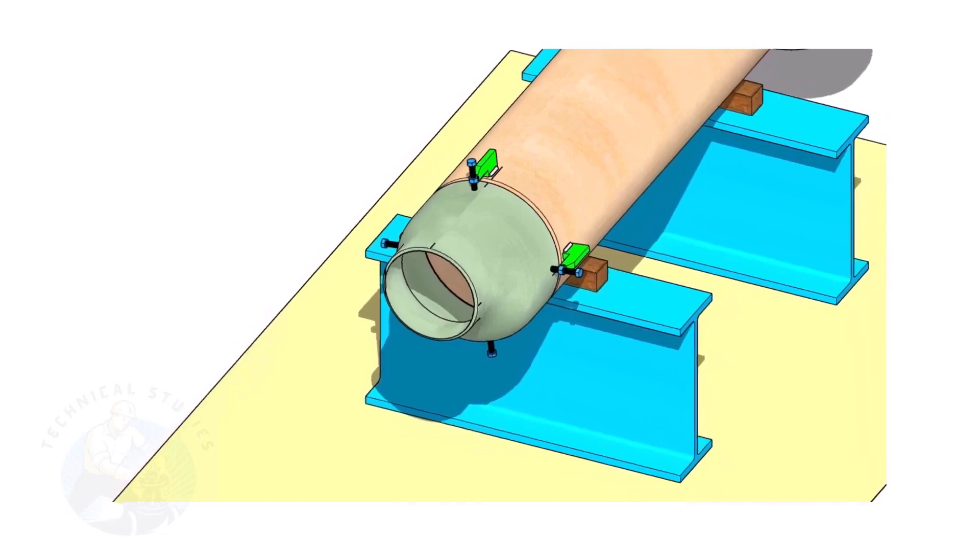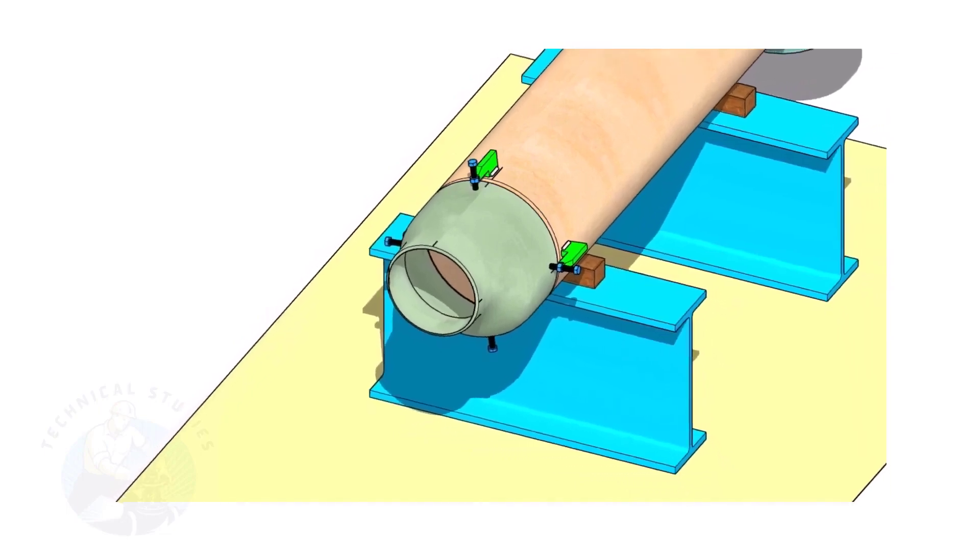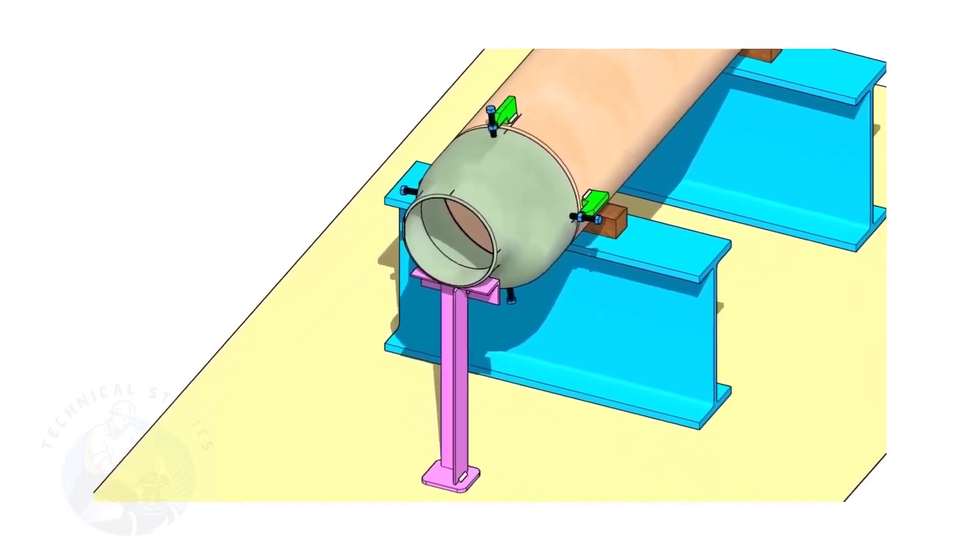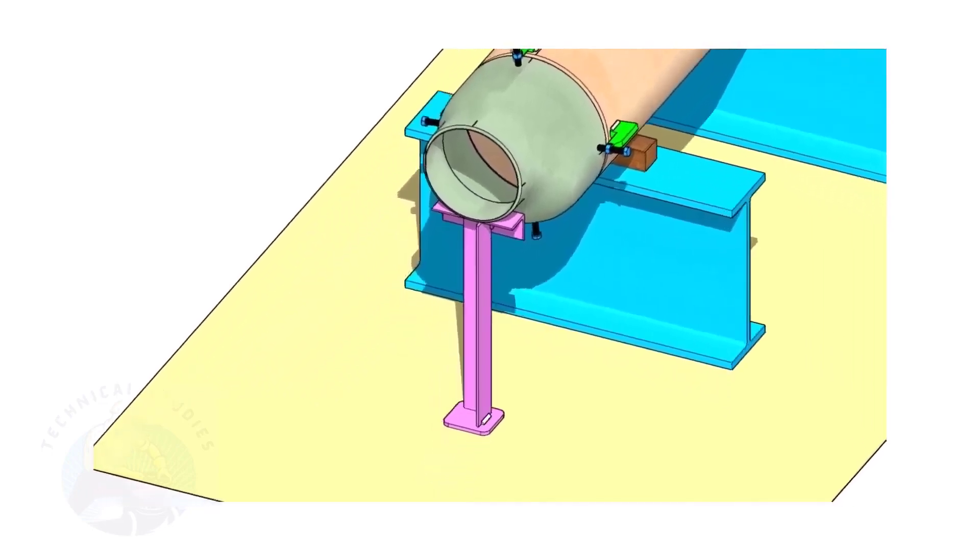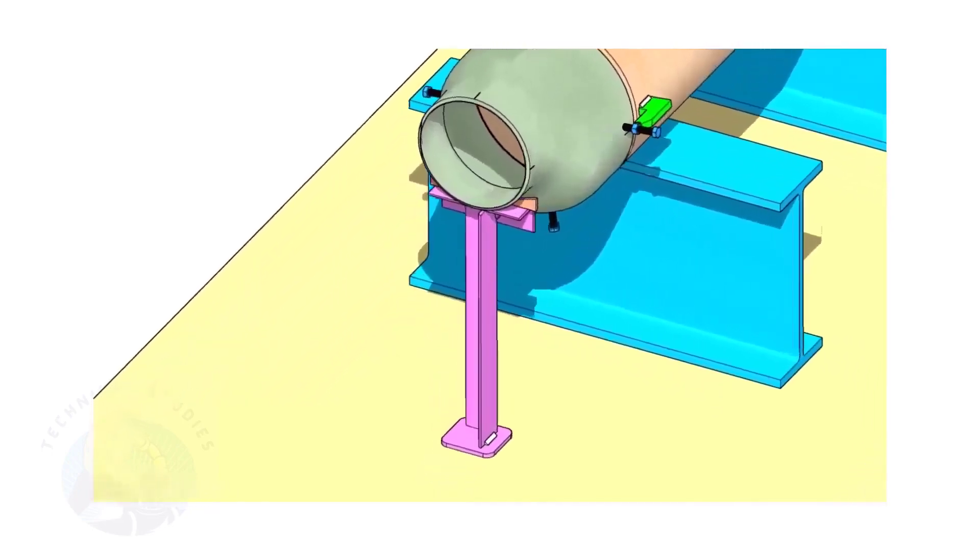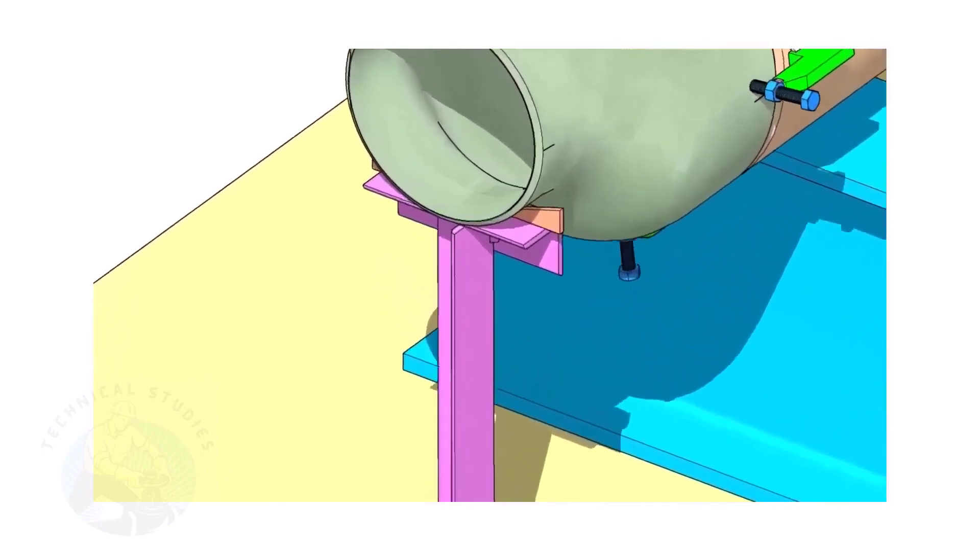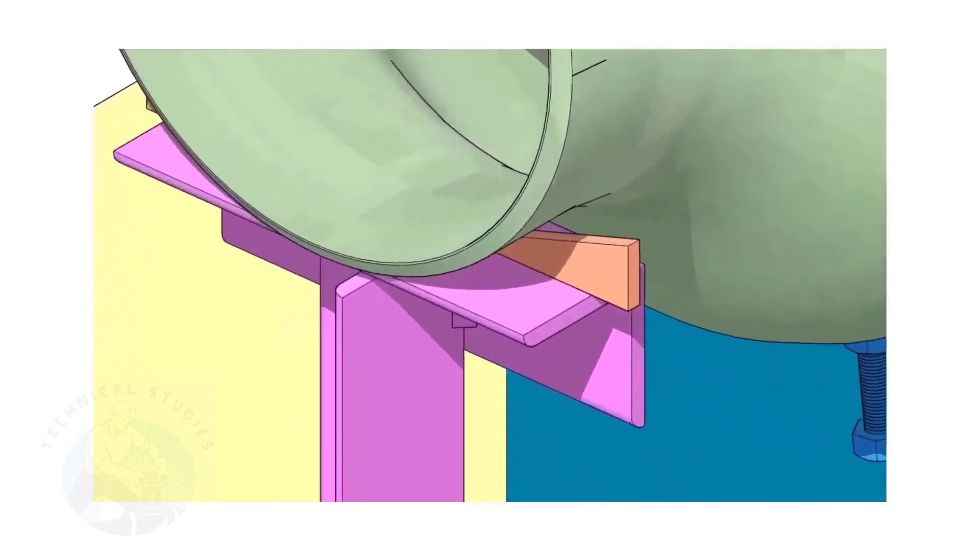Put the reducer in the clamps. Slightly tighten the bolts. Arrange proper supports below the reducer. The height of the support shall be adjustable. Here, I used simple wedges.